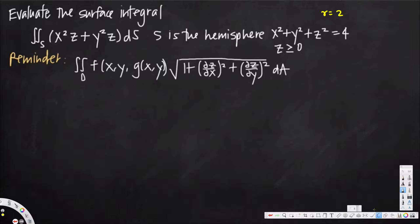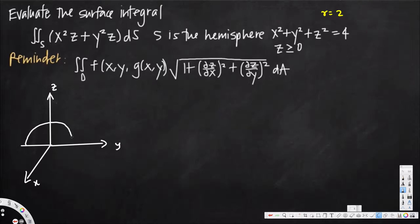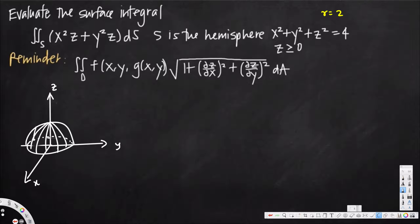Let's go ahead and draw the graph. We have the z-axis, y-axis, and x-axis, and we draw the hemisphere like this — the back side shown as a dotted line. For this sphere, no matter where you measure the radius, it is going to be 2 everywhere.